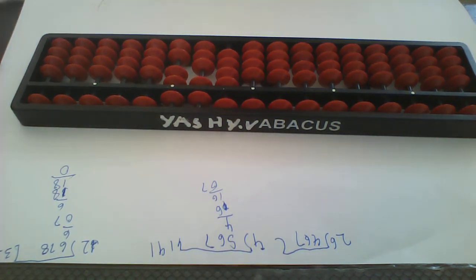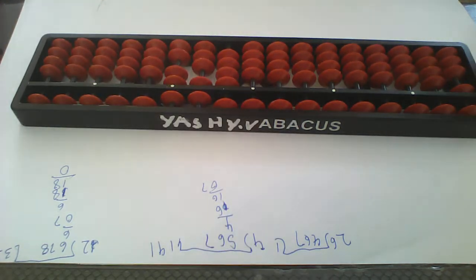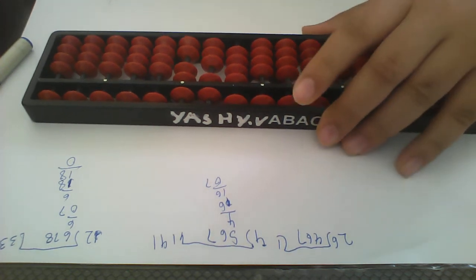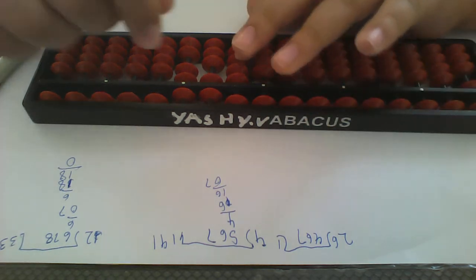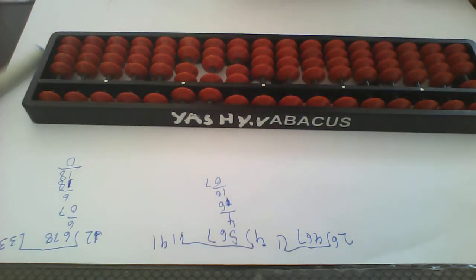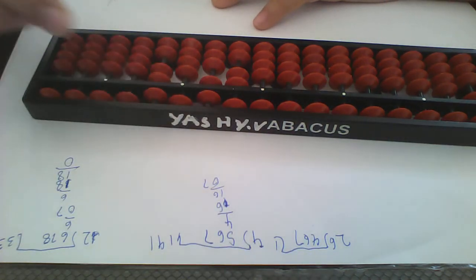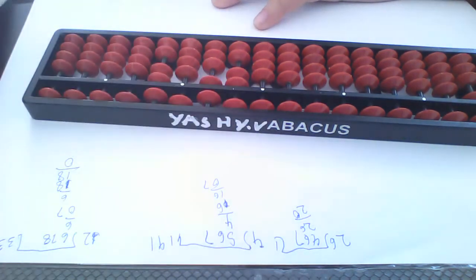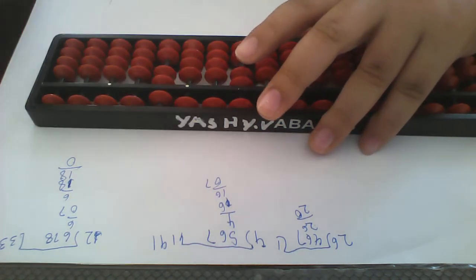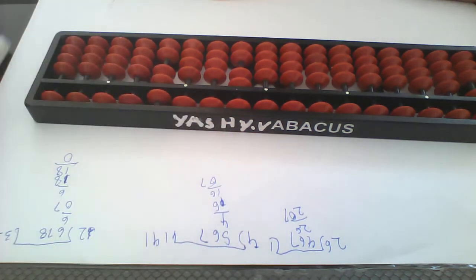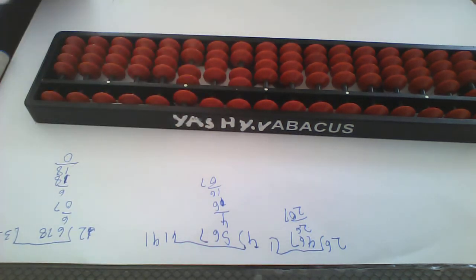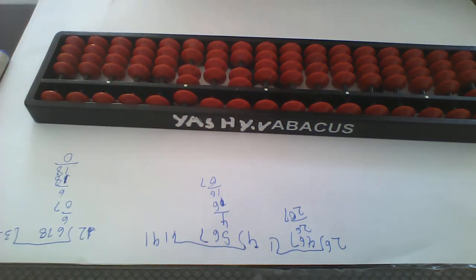So 26, we will put first here 1 only, because 2 we can't put. So from here we will minus 26. 20 will be the remainder. Now we will drop 7 down. Down means here like this. 207 we have to do now by 26. Can't do it directly, right?